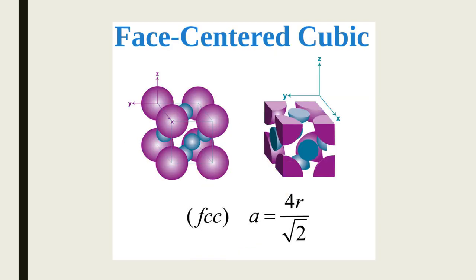The face-centered cubic unit cell has atoms on all corners and also on all six faces. Each face atom contributes one-half, and there are six faces, giving 3 atoms from faces, plus 1 atom from all eight corners, for a total of Z = 4 atoms always in a face-centered cubic unit cell. The edge length equation for FCC relates a and r differently than simple cubic or BCC. These equations will generally be provided as needed; we won't typically derive them.